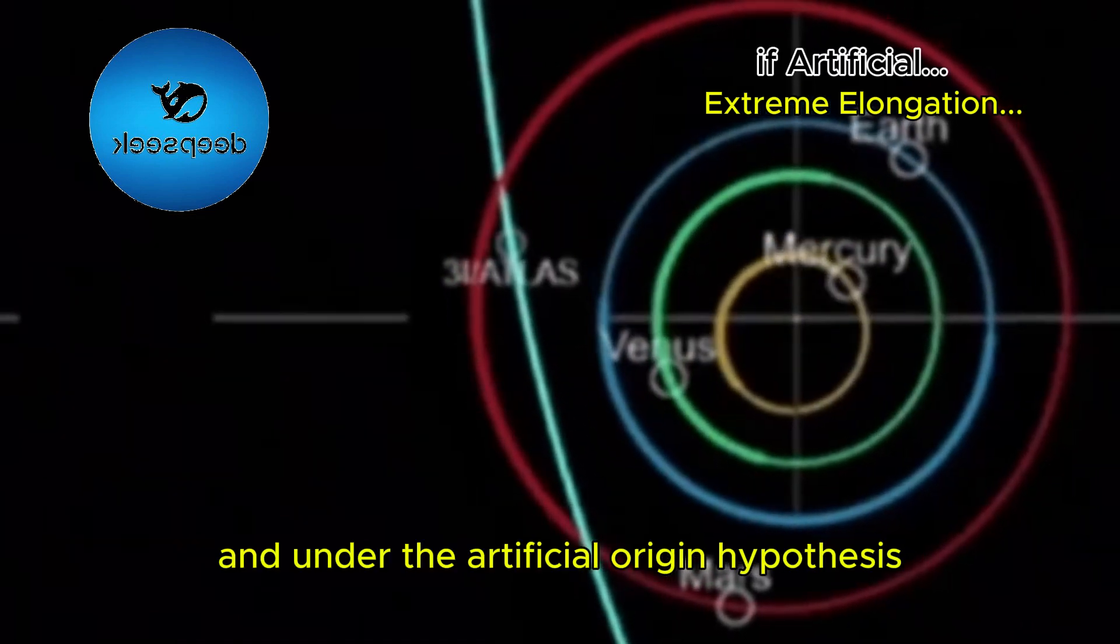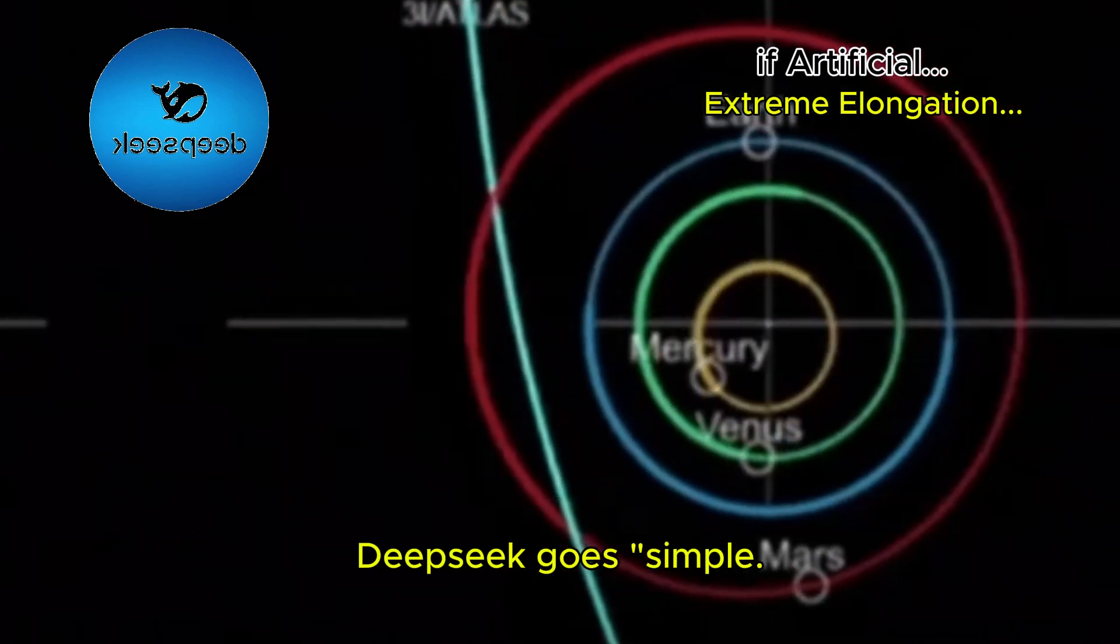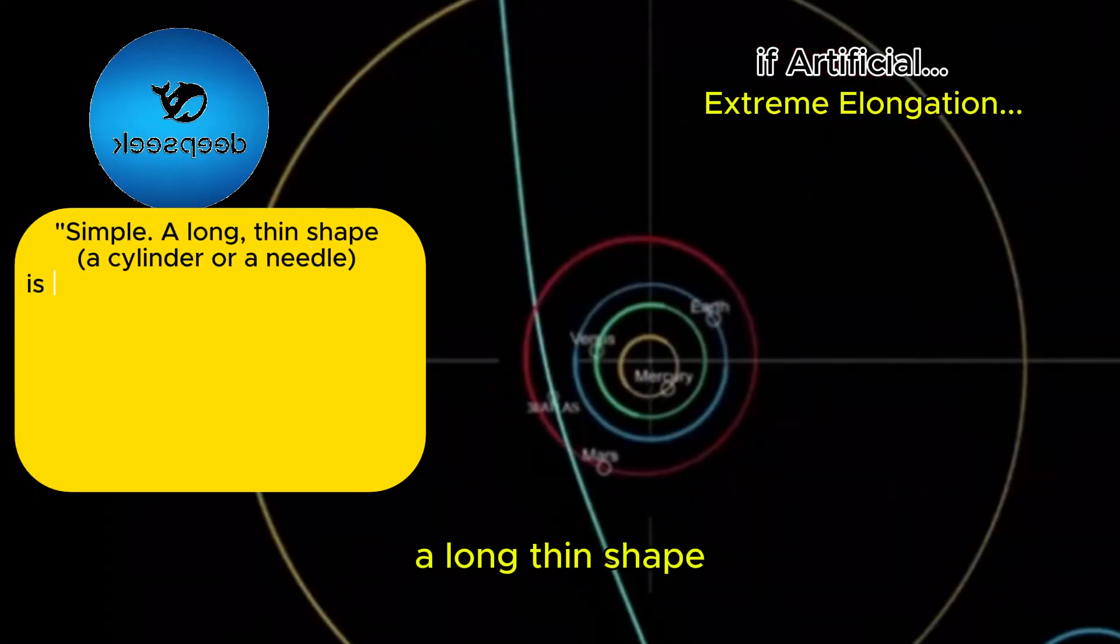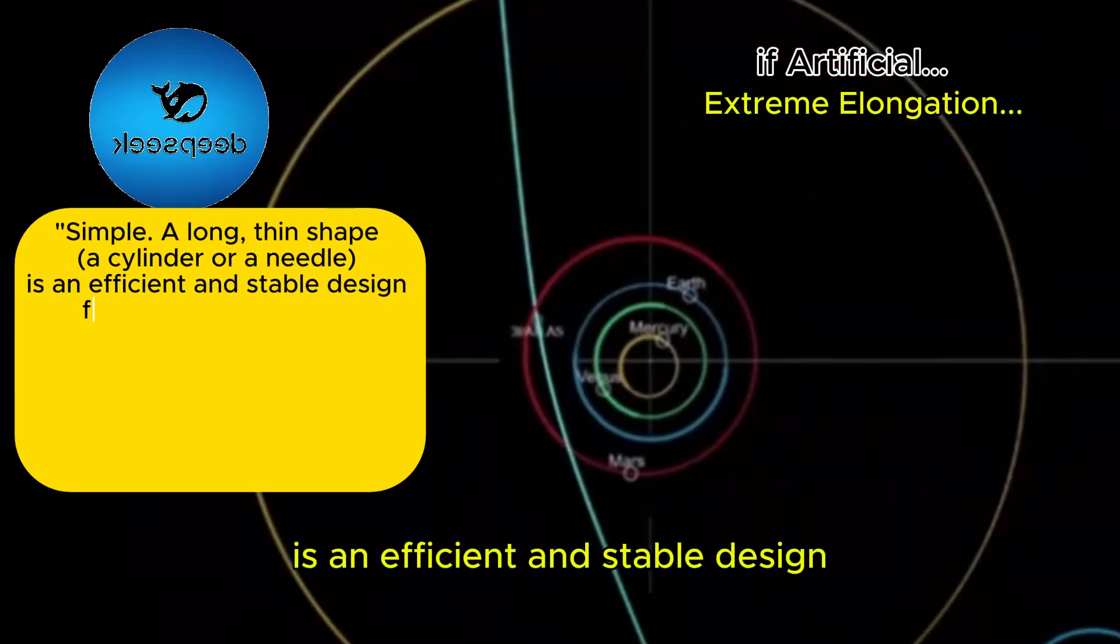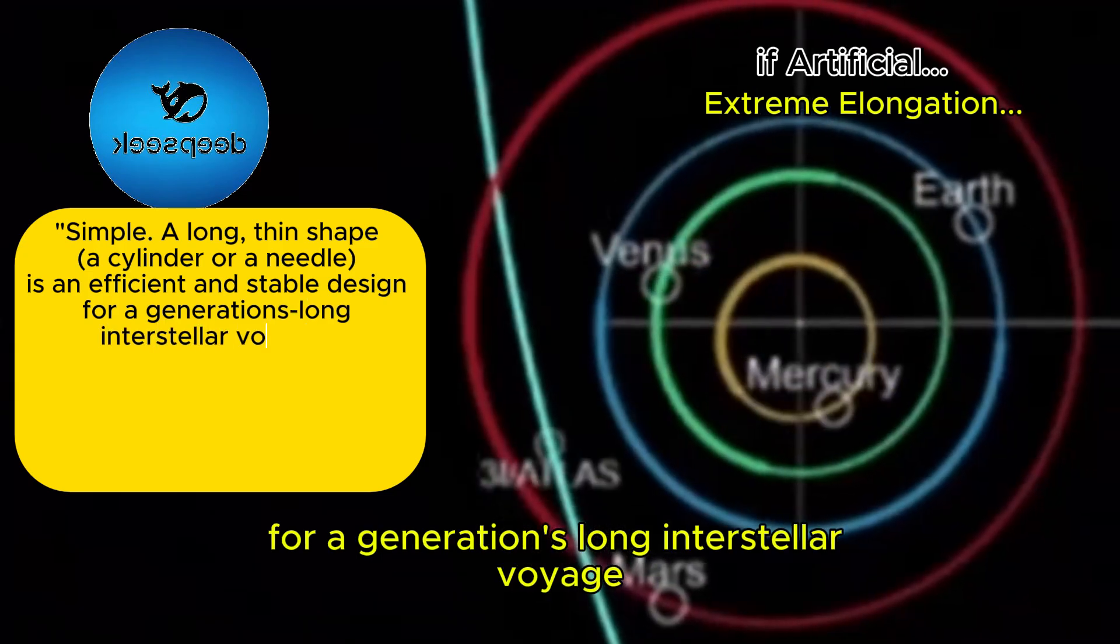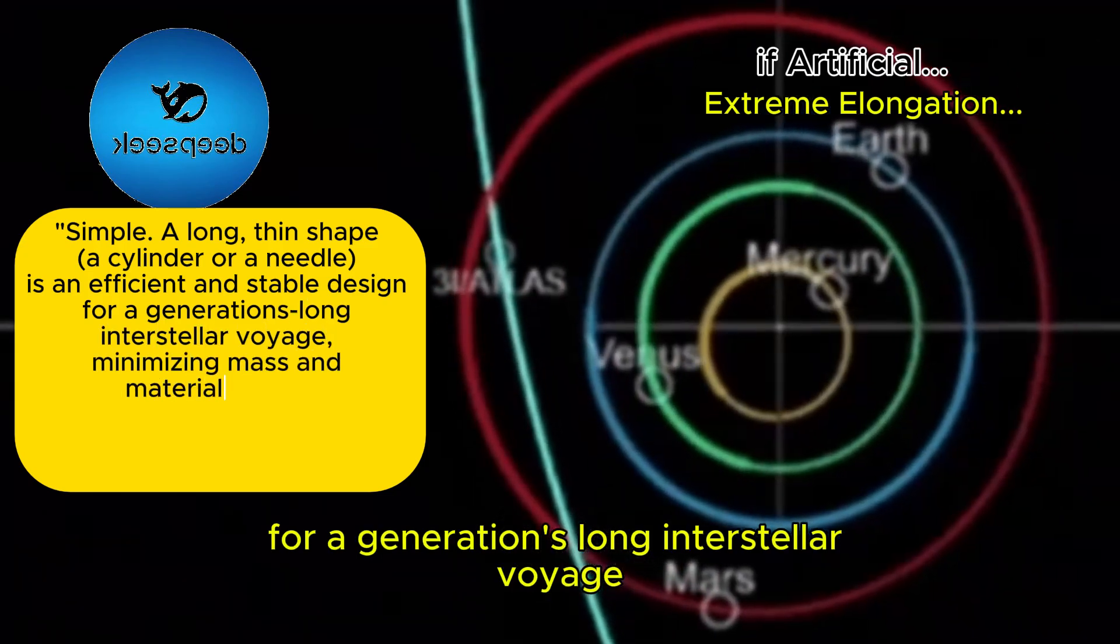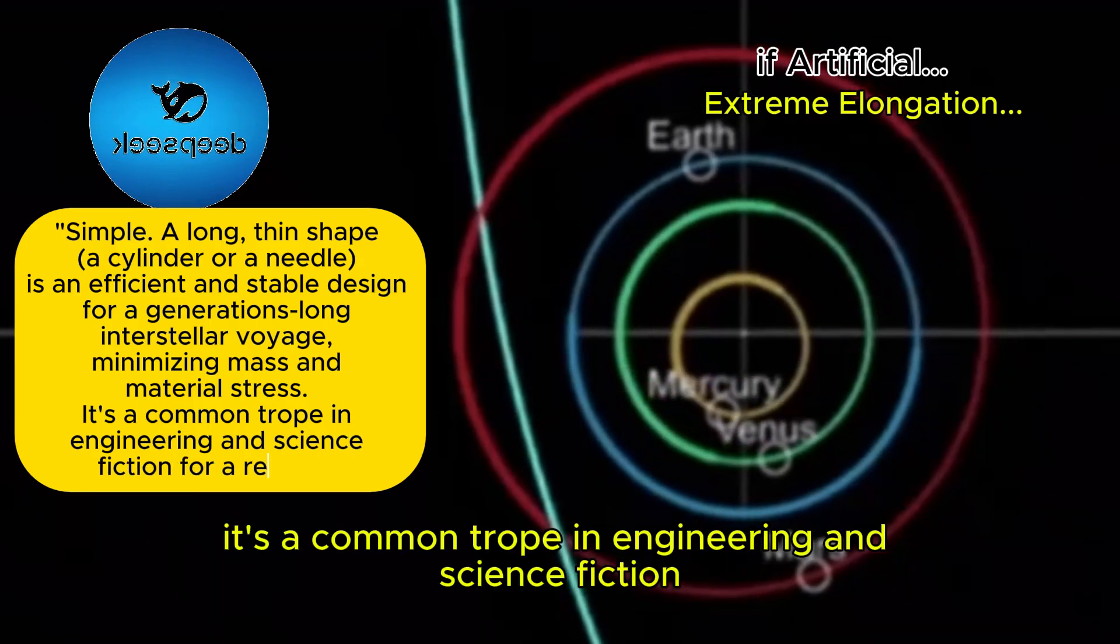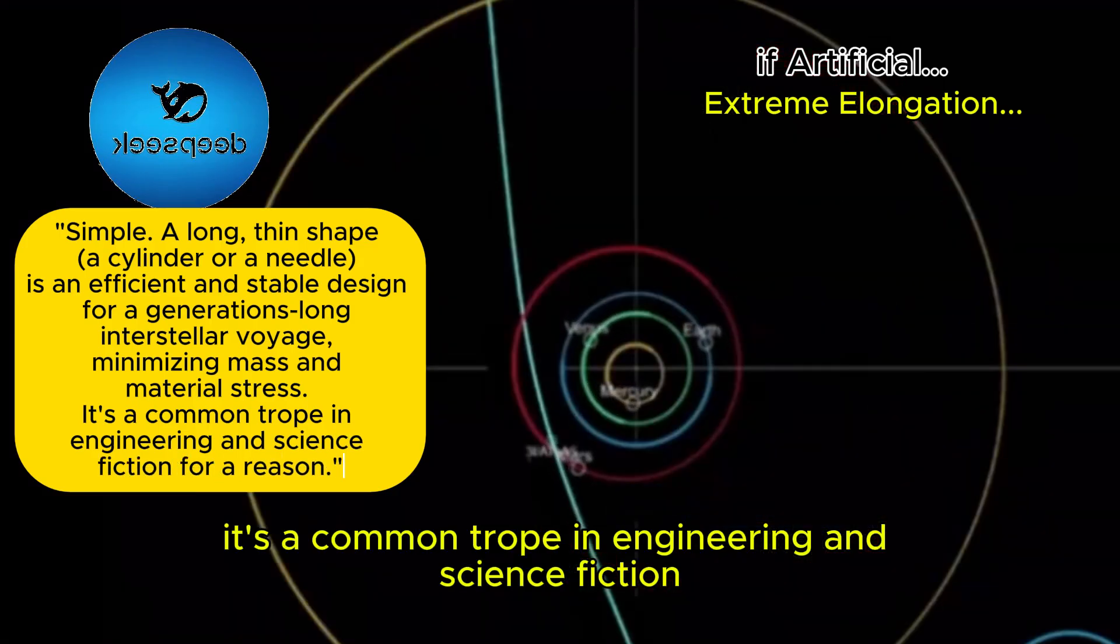And under the artificial origin hypothesis, DeepSeek goes: Simple. A long, thin shape, a cylinder or a needle, is an efficient and stable design for a generations-long interstellar voyage, minimizing mass and material stress. It's a common trope in engineering and science fiction for a reason.